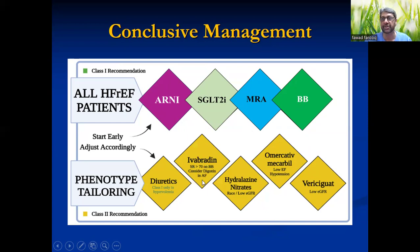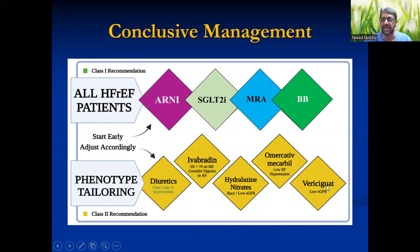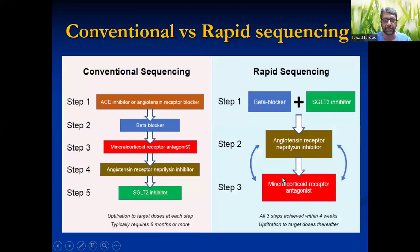Digoxin if your patient is in atrial fibrillation. Hydralazine-nitrate in specific cases or severe contraindication to ARNI and RAS blockers. Vericiguat for low EF and hypotension, very low eGFR, and patients not responding to your conventional medication — then you have to think of these two novel anti-failure medications.